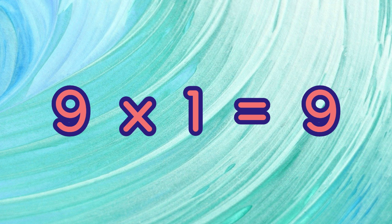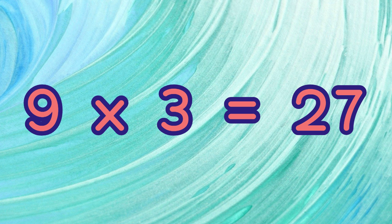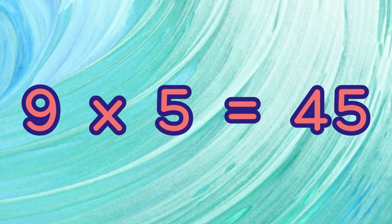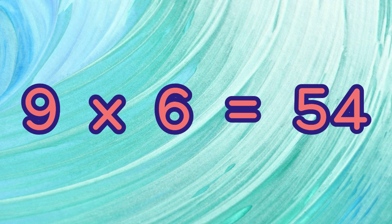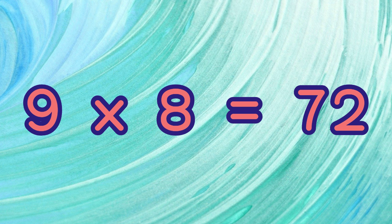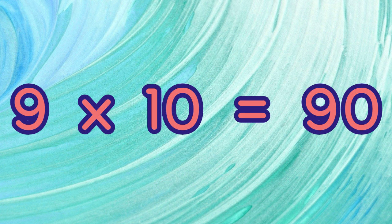9 times 1 equals 9. 9 times 2 equals 18. 9 times 4 equals 36. 9 times 5 equals 45. 9 times 6 equals 54. 9 x 7 equals 63. 9 x 8 equals 72. 9 x 9 equals 81. 9 x 10 equals 90.